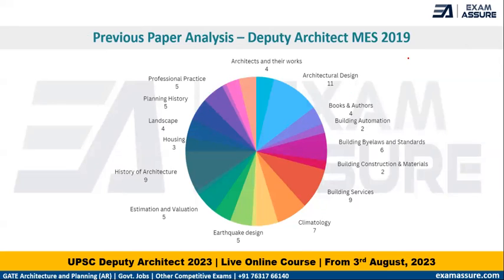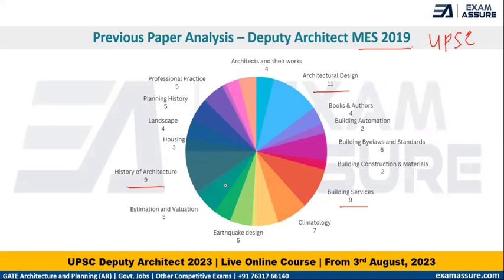Analyzing the question paper for 2019 of Deputy Architect — this exam was held for the Military Engineering Services, which is different from CTWD. However, the exam was conducted by UPSC itself, so we will also look at this question paper. Here also we see a very similar pattern: 11 questions from Architectural Design, 9 questions from Services, 9 questions from History of Architecture. Then Climatology and Building Bylaws are given a little more weightage, and likewise for the other subjects.